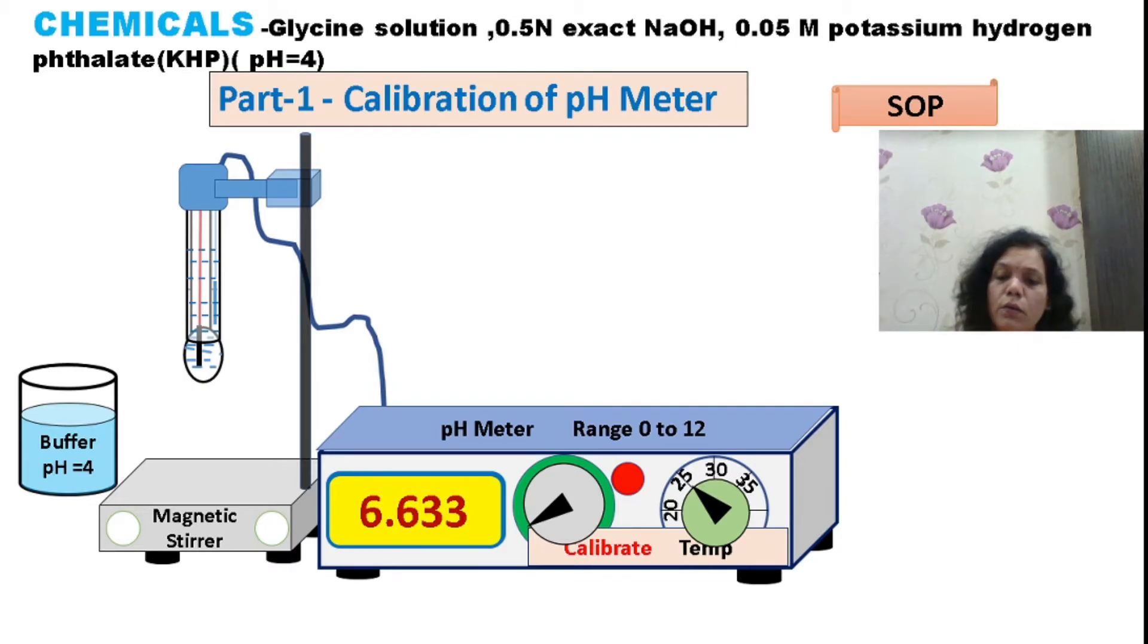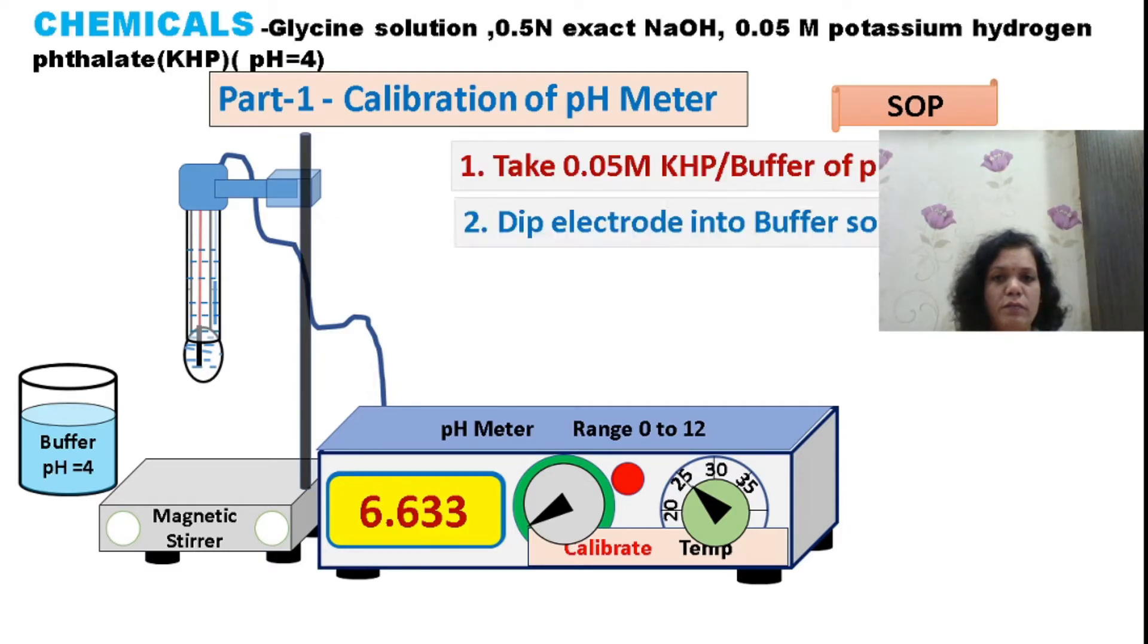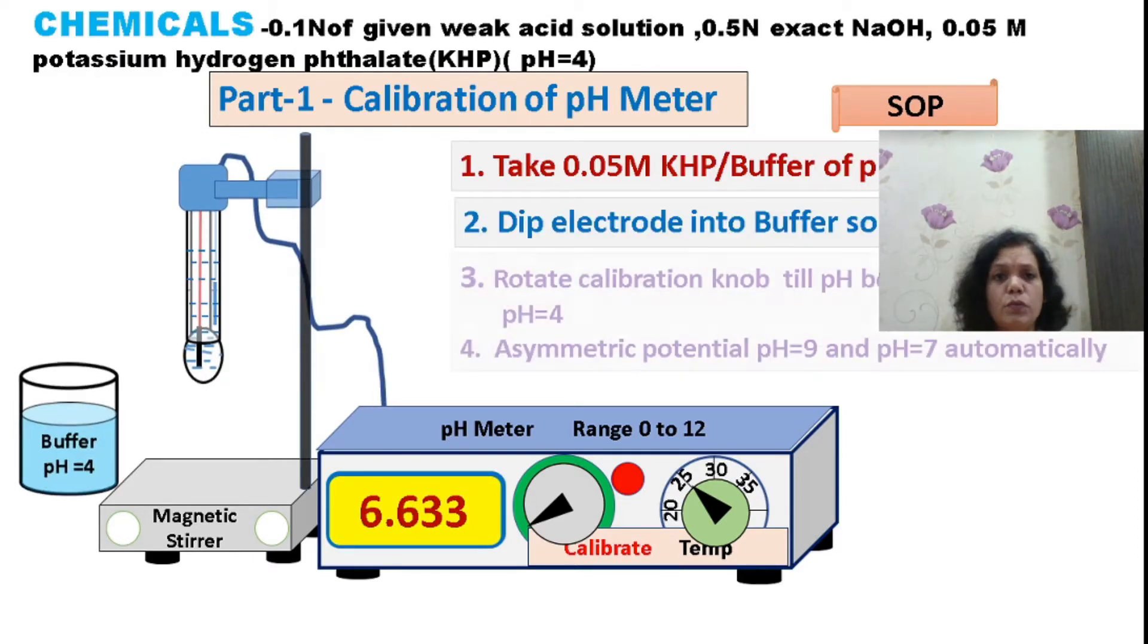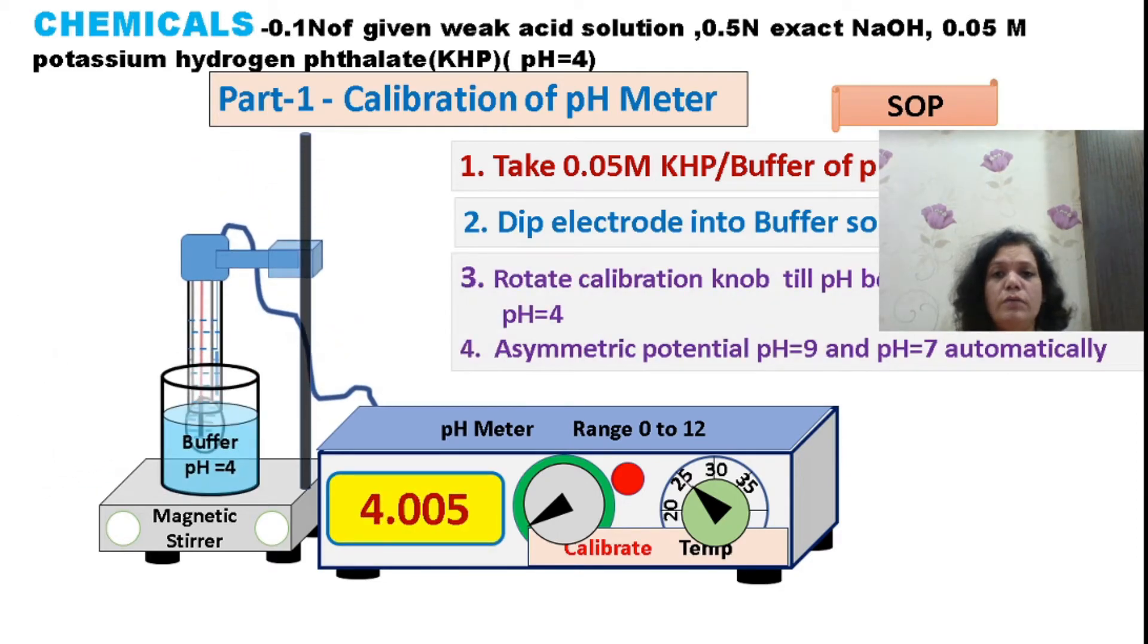I can calibrate the pH meter by dipping the glass electrode in a known pH solution. Here we have taken 0.05M potassium hydrogen phthalate solution. Measure the pH and check the digital display - the pH observed is 4.005. We can also do calibration at pH 9, and it will automatically show pH 7 when dipped in distilled water. Once calibration is complete, the pH meter is ready. Wash the electrode with distilled water.